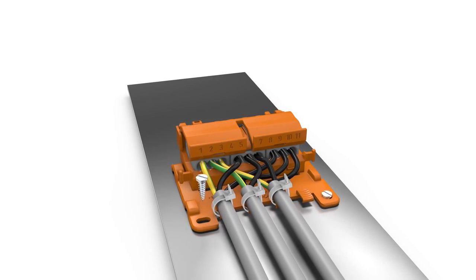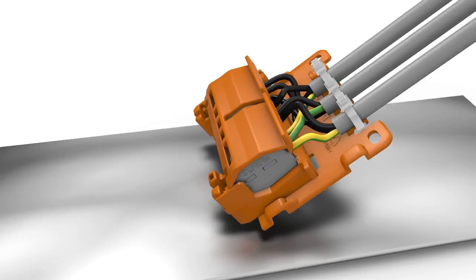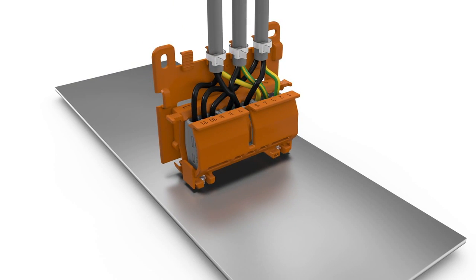The mounting carrier, with or without the strain relief plate, can be horizontally mounted to any smooth surface using screws. Screw mounting with or without the strain relief plate can also occur on any smooth vertical surface.